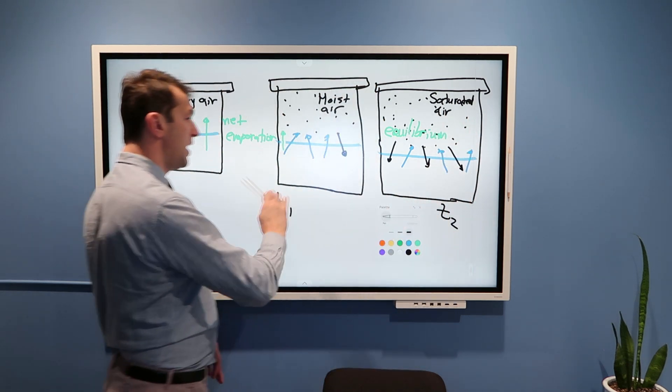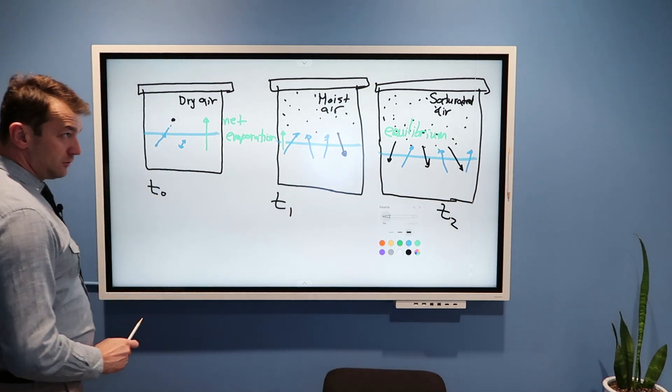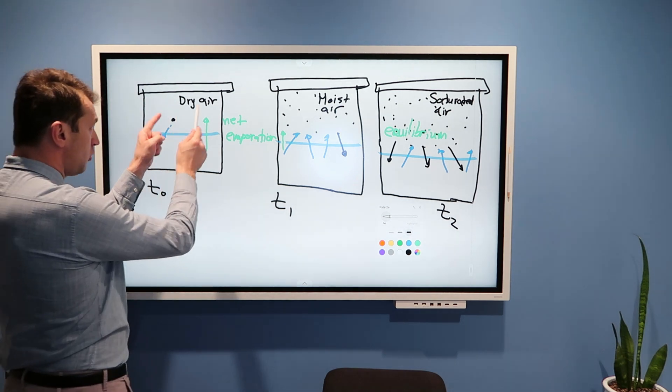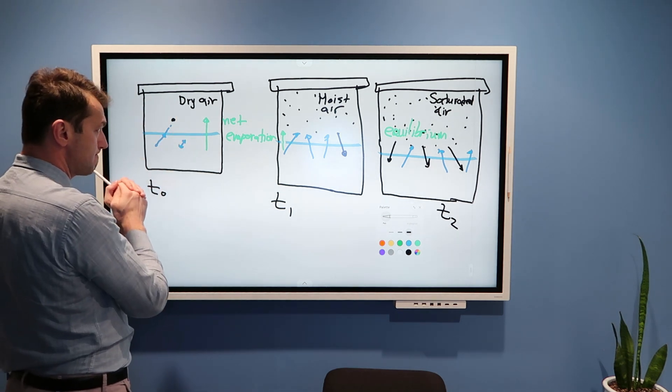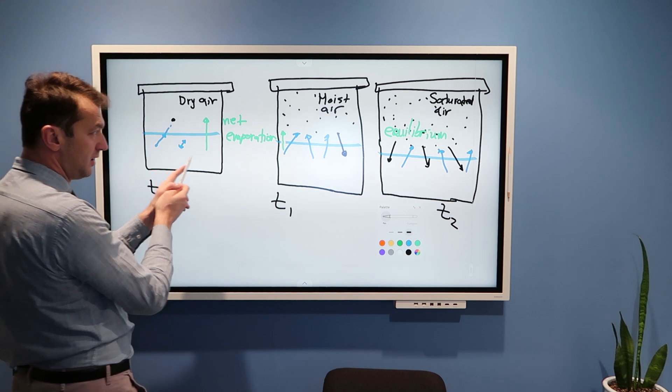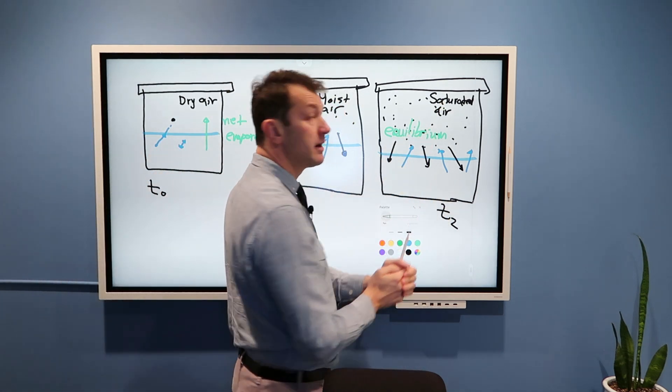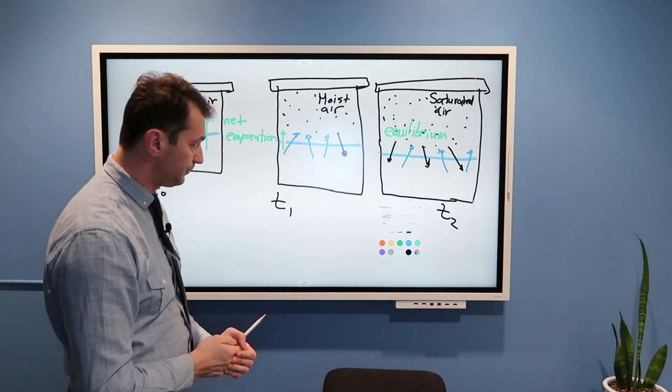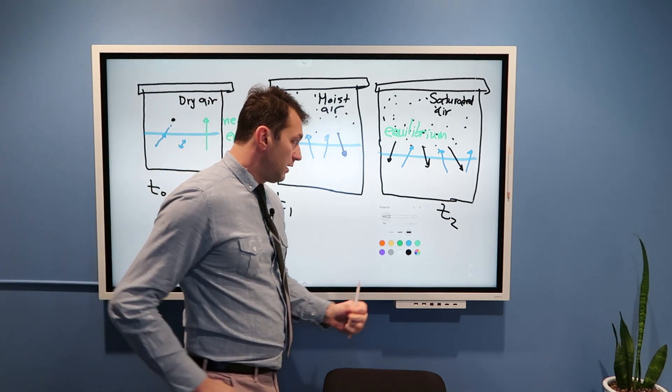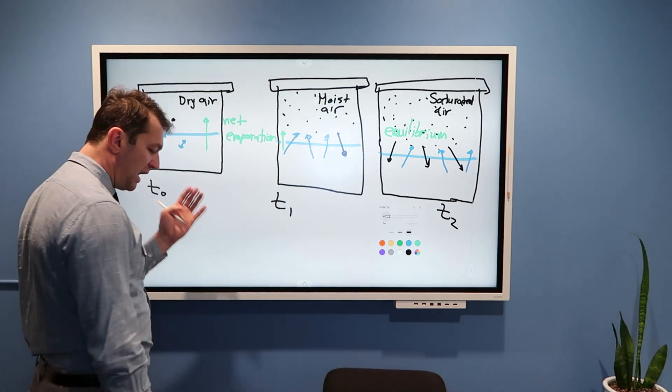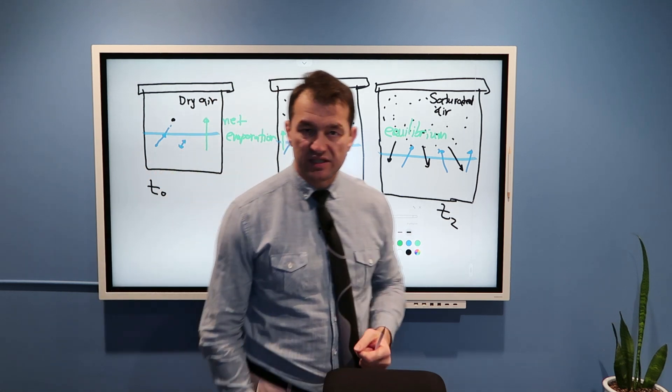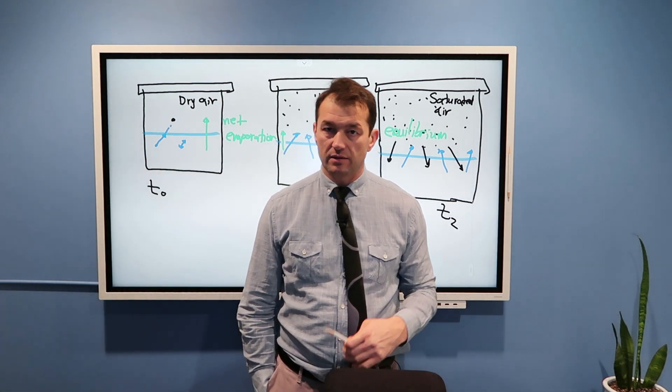And we would call this condition saturated air. So in this one drawing we describe the concept of dry air above liquid water, then moist air above liquid water and saturated air above liquid water.